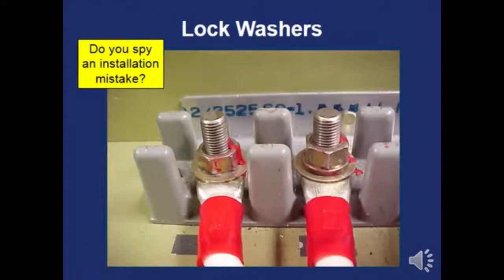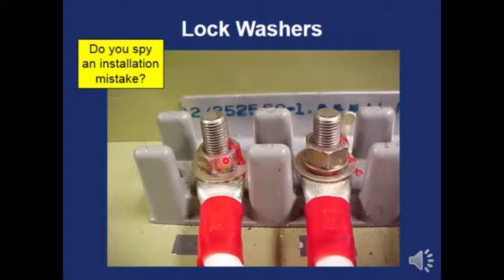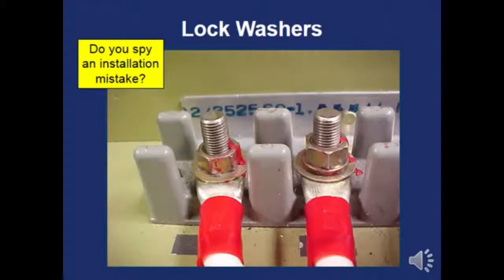Put on your inspection glasses and find the mistake made during installation. Notice that the torque seal is smashed over — something's missing. Somebody's got a lock washer hiding, perhaps it fell on the floor and they didn't realize it.